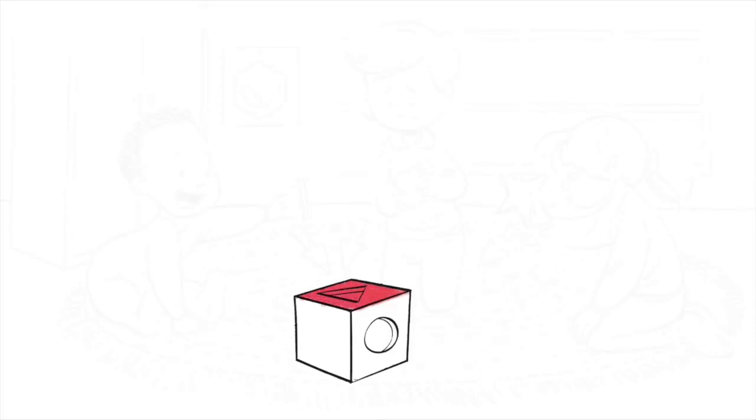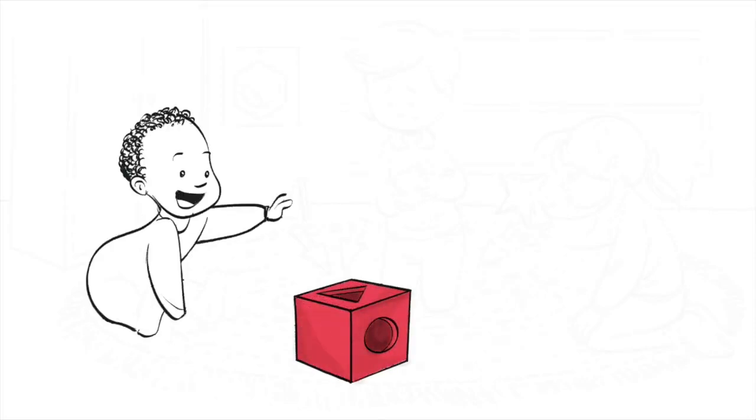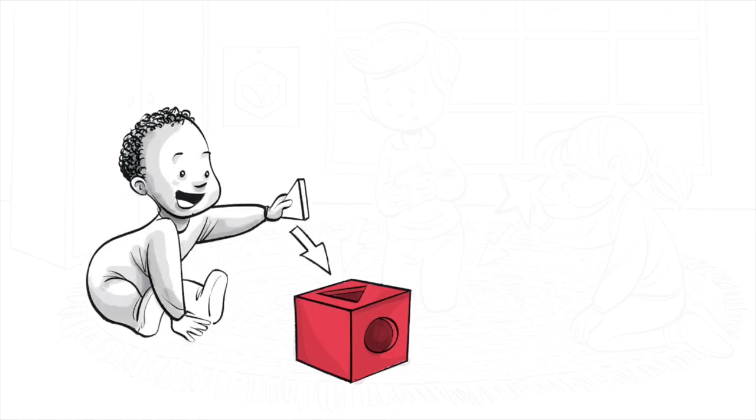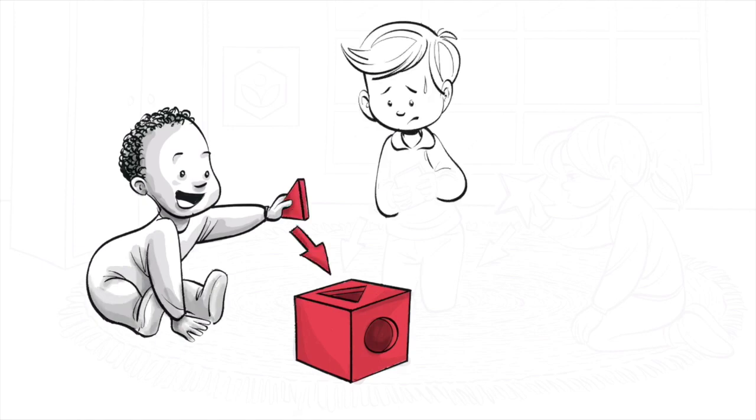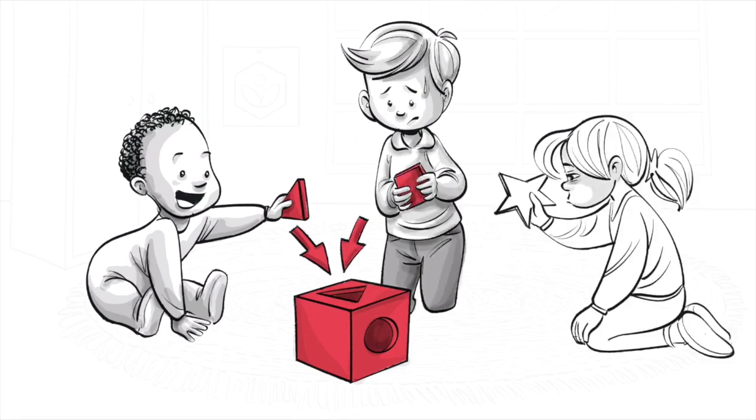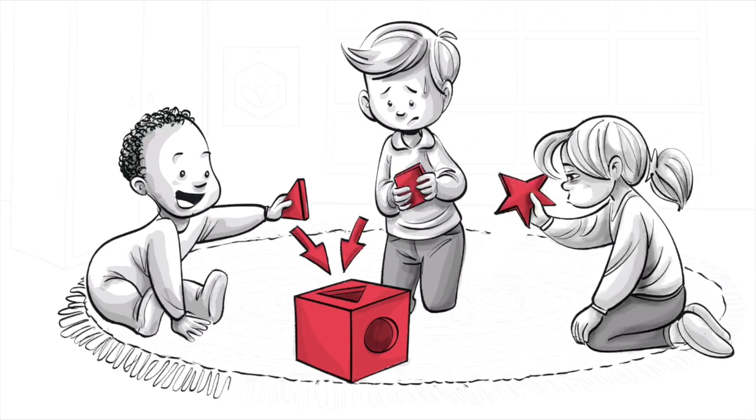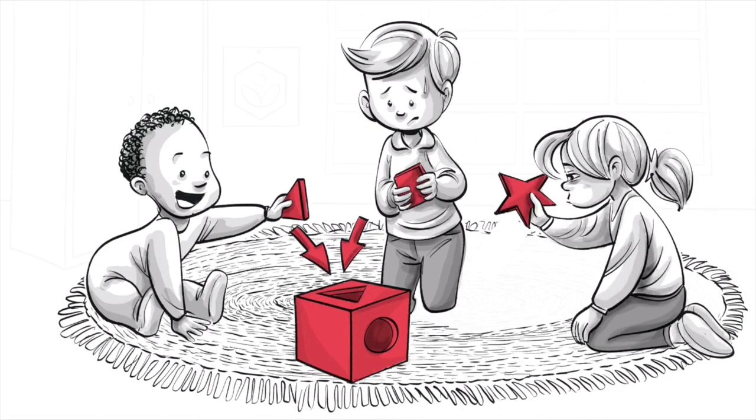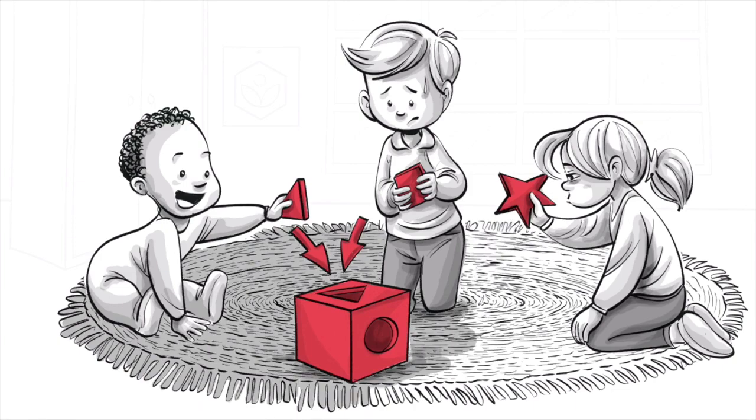We can think of a schema as a mental framework in the form of a kid's toy. Things we already fully understand, say a triangle, get into our brain without a problem. When new information is similar to what we know, say a square, it can enter the brain through assimilation. For completely new information, here a star, this doesn't work. Then we need accommodation and to change the schema itself.